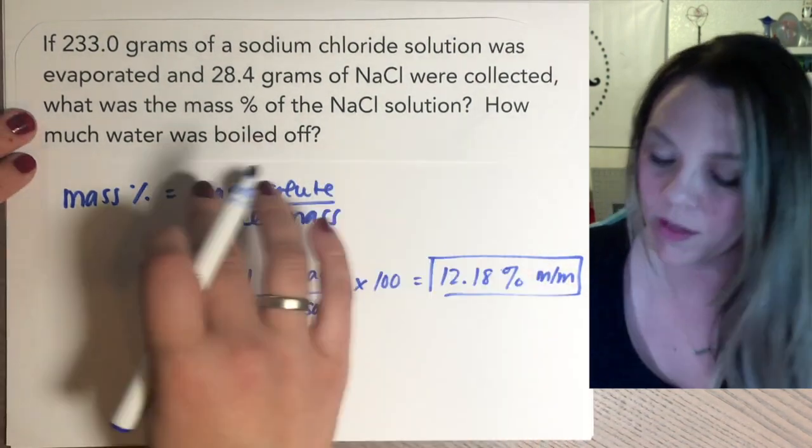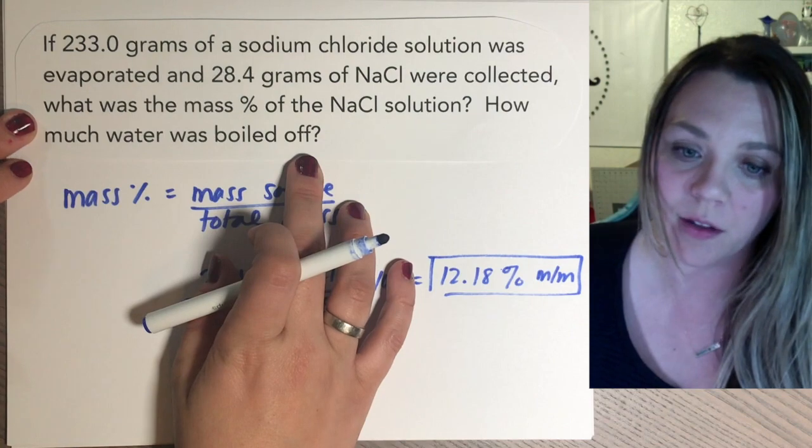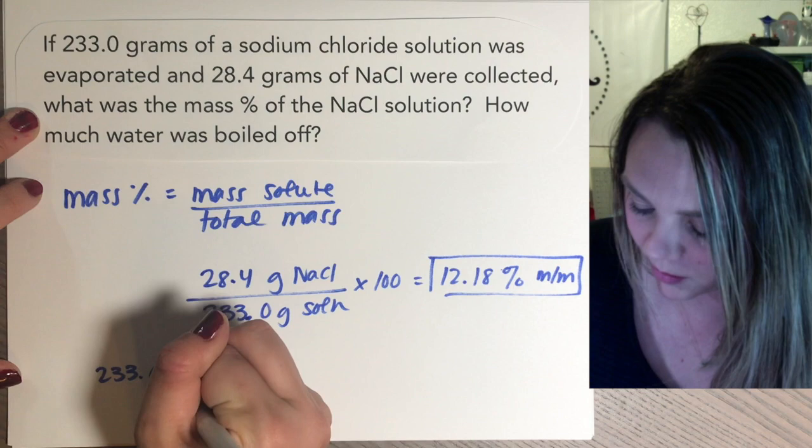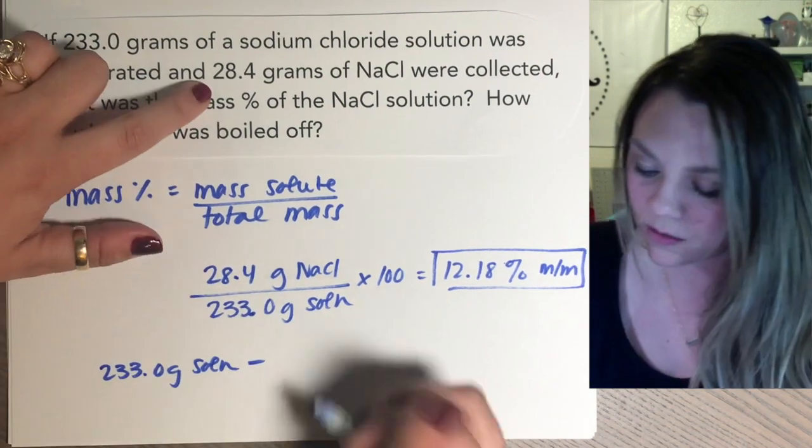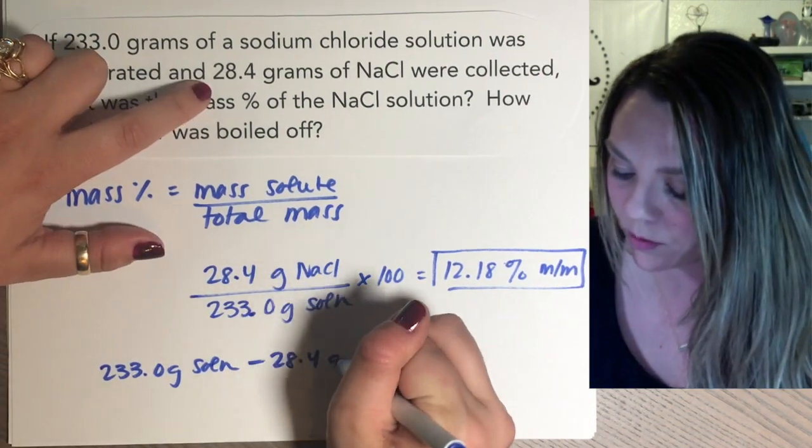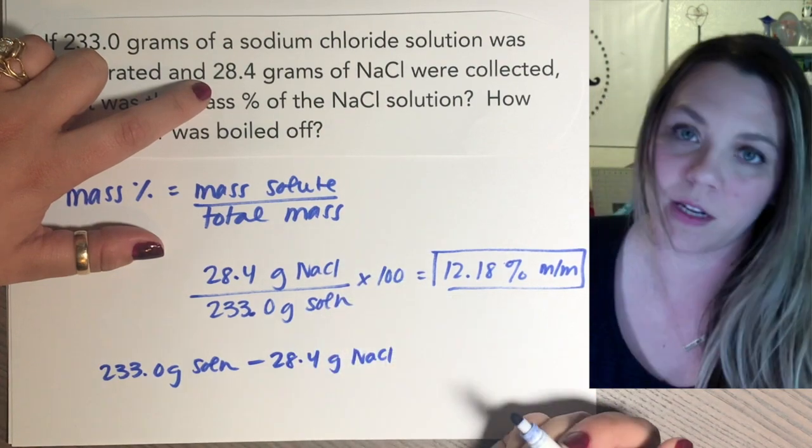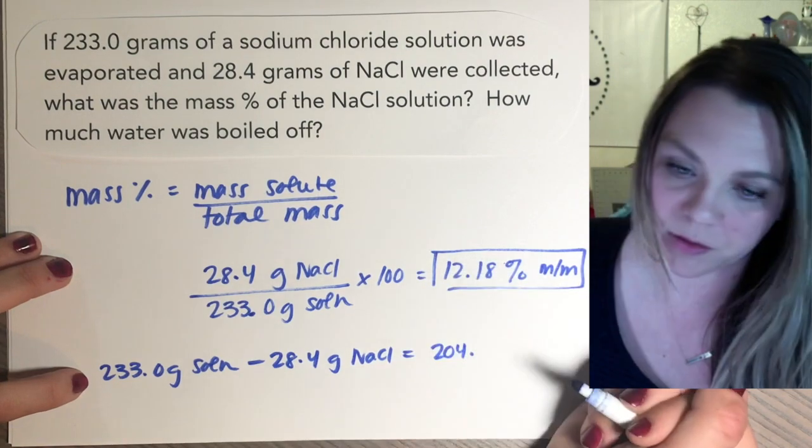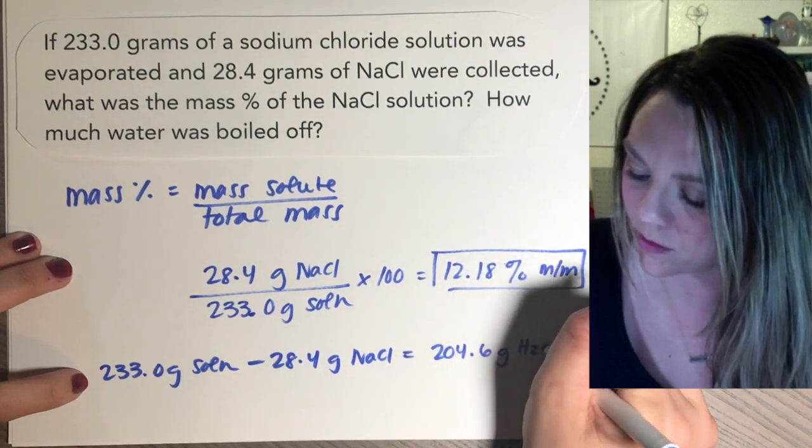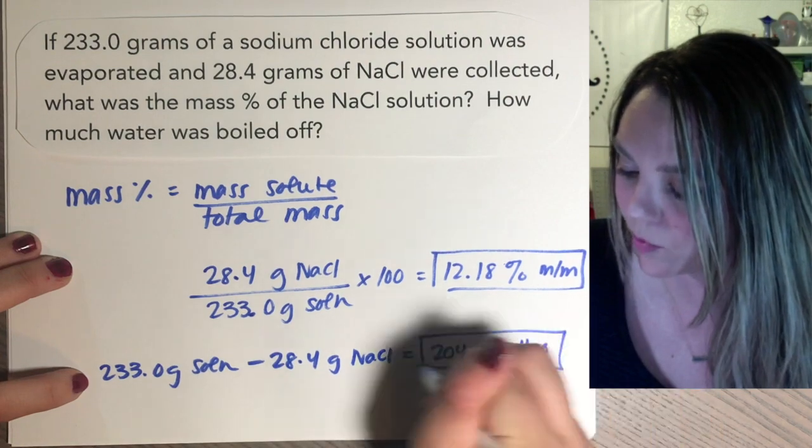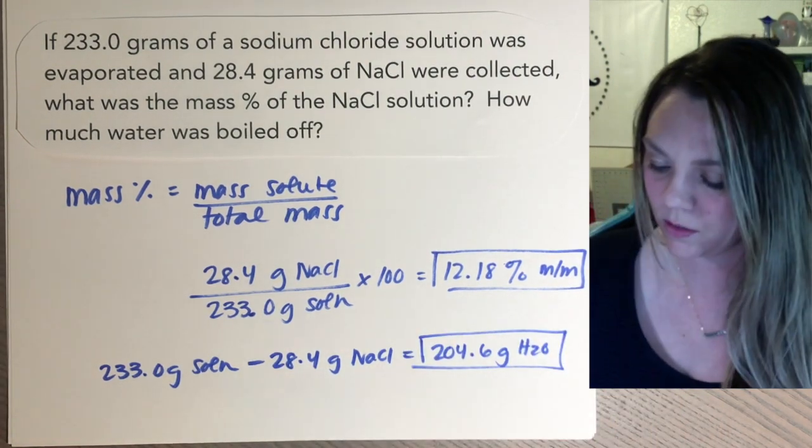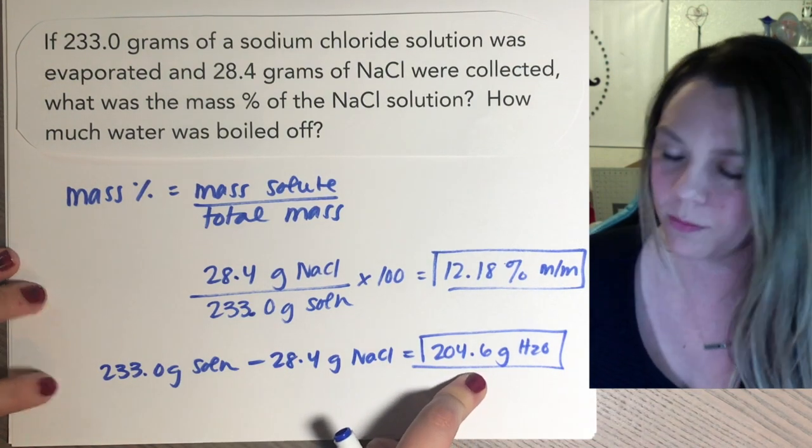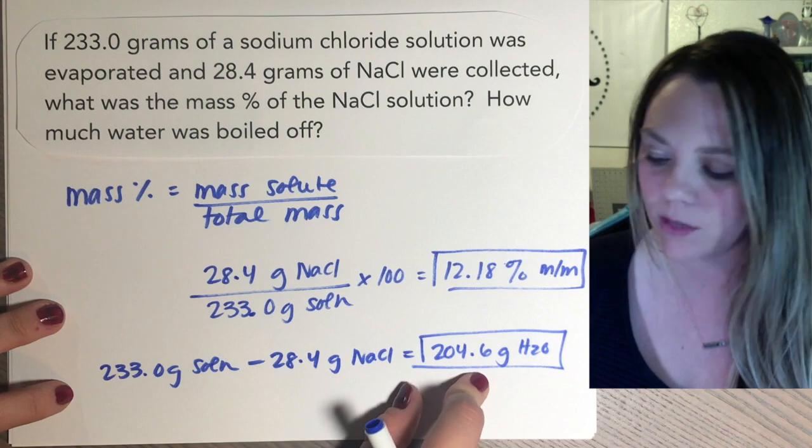So that's one part. And then the next question is how much water was boiled off? Some simple subtraction. So 233 grams of your solution. Subtract out the 28.4 grams of NaCl you had leaves you with 204.6 grams of water that boiled away. So your solution was made up 28.4 grams of salt and 204.6 grams of water.